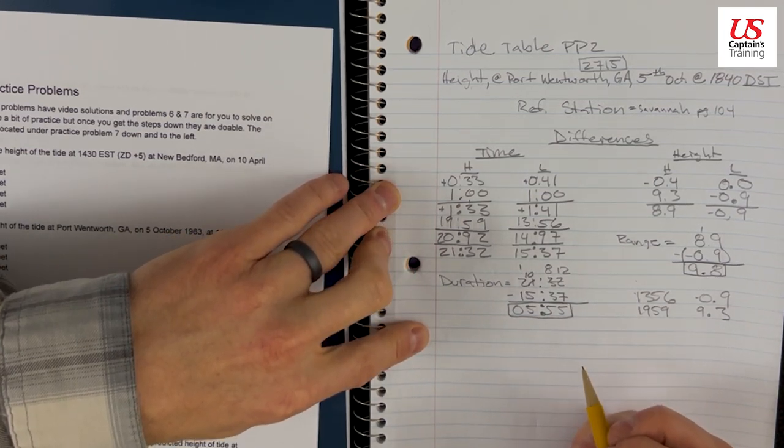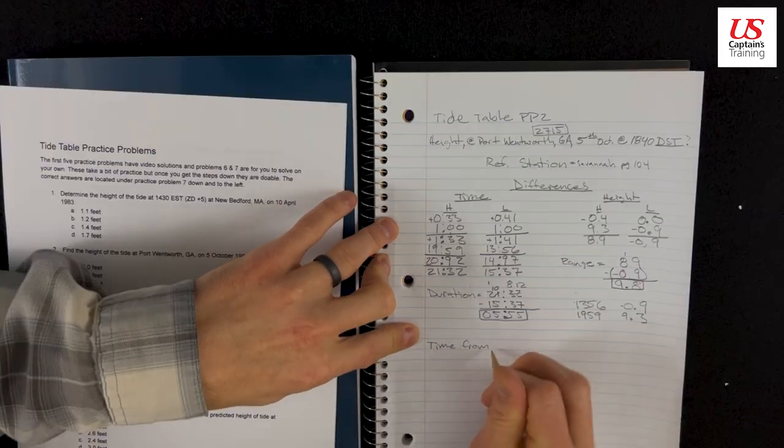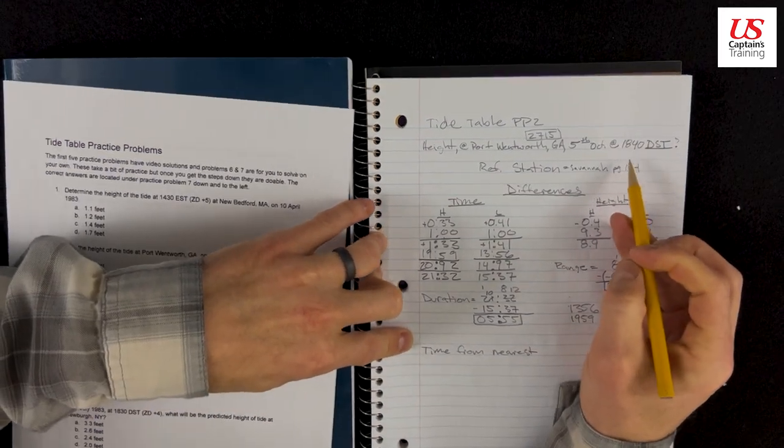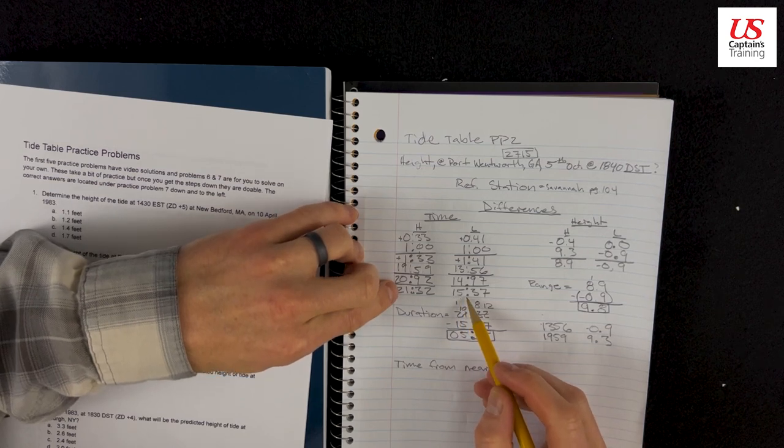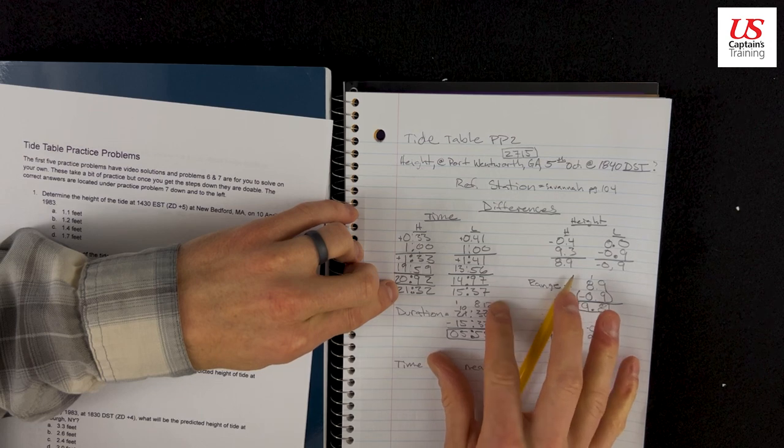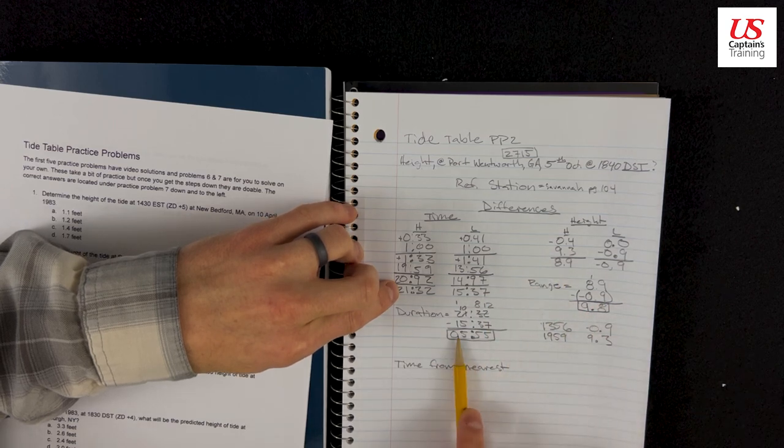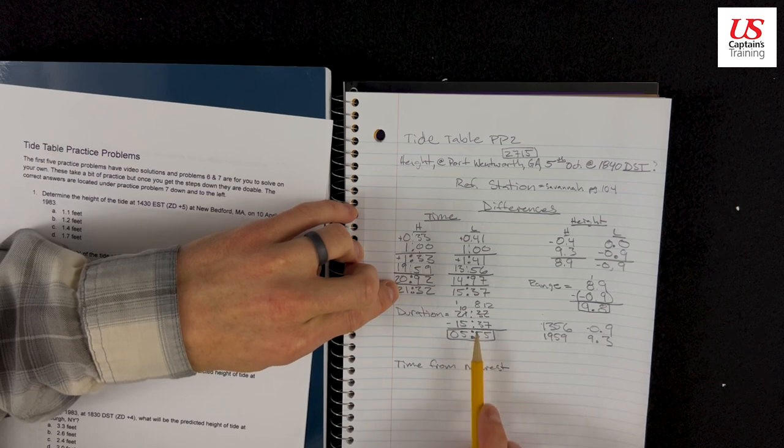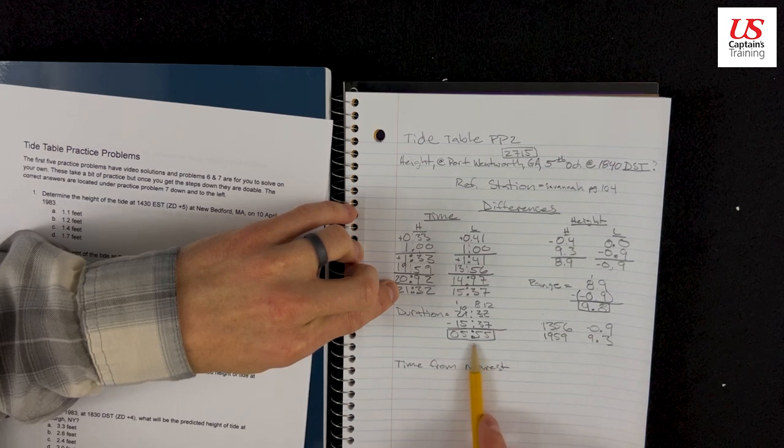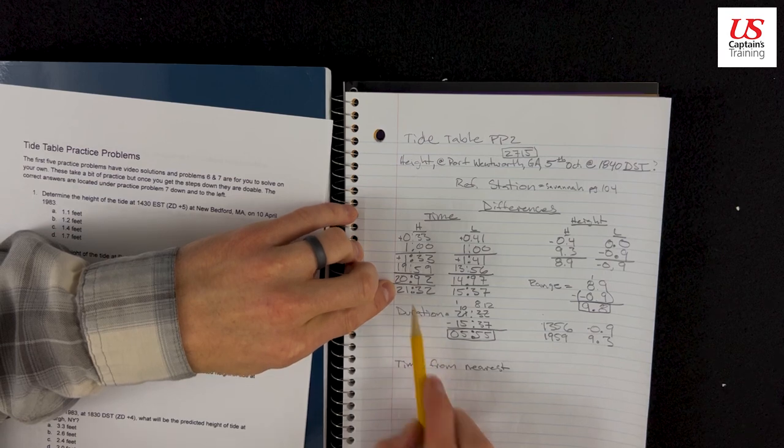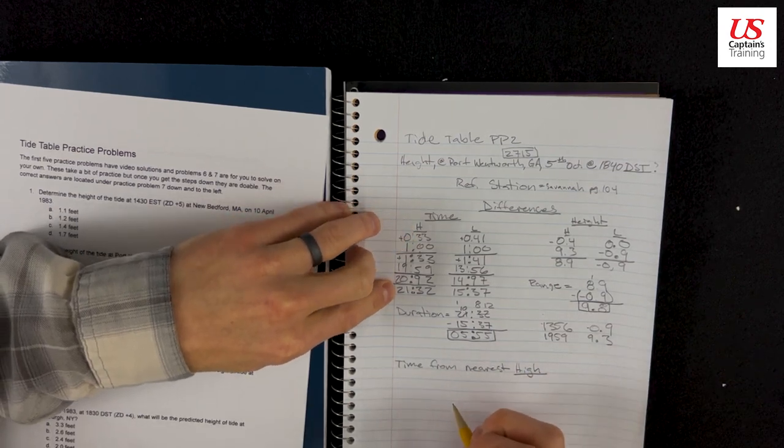So our range is 9.8. Our duration is 5 hours and 55 minutes. The next thing we need to find before we can enter table 3 is the time from the nearest. So we need the time from nearest. Now is 18:40. Which one is it closer to? 15 or 21? Well, 15, 16, 17, 18. That's 3 hours and 3 minutes. Look at this. See how it's 555? This is the whole duration. So 3 hours and 3 minutes is more than half of this. So we know it's going to be over here. We know it's going to be the nearest high.